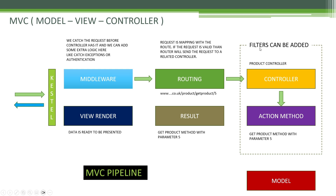If it's okay, we continue sending it to the controller; if it's not, we can throw an exception. This is how filters work. Then the action method does its job — it goes to the model, gets the data, and sends it to the user via a view result. The action method sends the data to the view, and as a result we get the view rendered to the user.